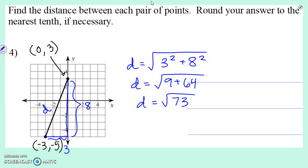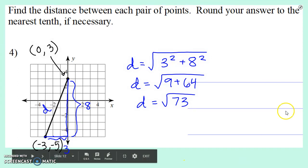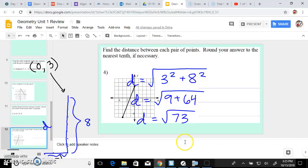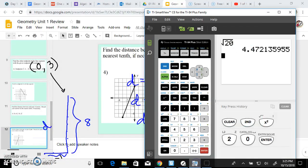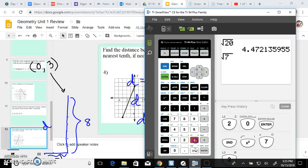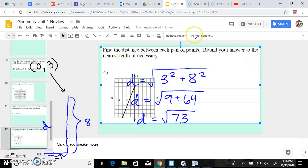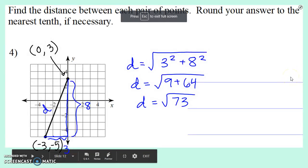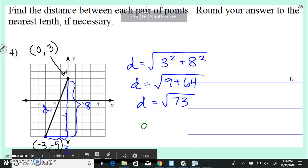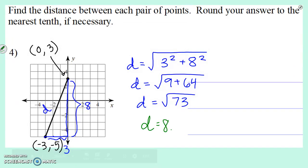And round your answer to the nearest tenth. So that's definitely not a perfect square. So we're going to take the square root of 73. So second, x squared, 73. 8.54. If we want to the nearest tenth, look at the hundredth place, 4. 4 will not round up 5, so it'll just stay 8.5.